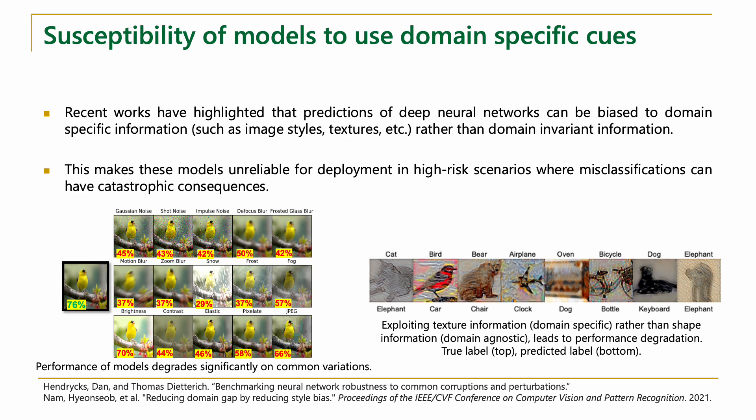Prior works have shown that predictions of such models are biased towards domain-specific information, such as image styles or textures, rather than domain-invariant information, such as the object shape. As a result, if data from an unseen style is encountered by these models at test time, the model is bound to produce an erroneous prediction. Such misclassification could be catastrophic in safety-critical scenarios such as self-driving cars or drone-based rescue operations.